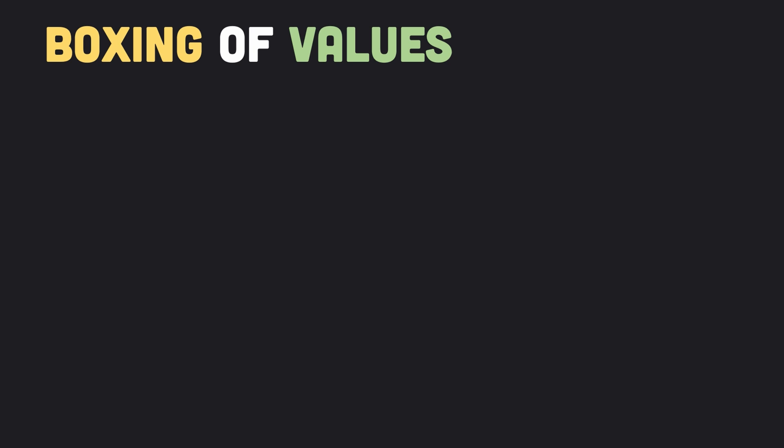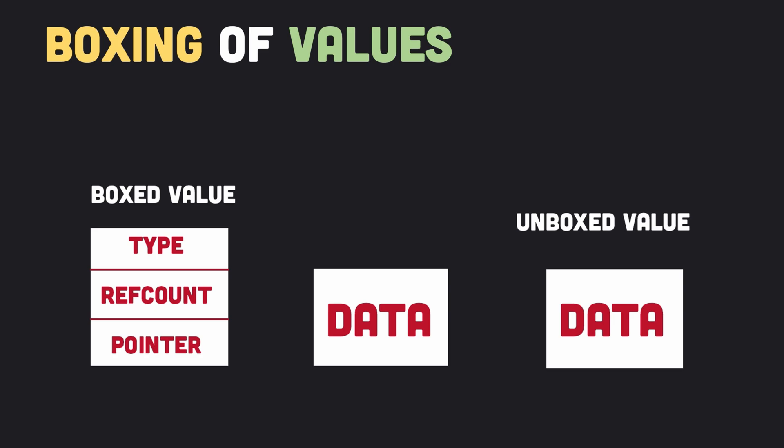In almost every dynamic language, every single value is boxed. What that means is that the actual data is placed inside a sort of generic box. More specifically, the value gets bundled with metadata which describes it. Most important is a tag describing the type of the value. Frequently there are other fields to handle memory management. If memory is managed by reference counting, then a reference counting field (refcount) would be included. In most modern programming languages, memory is managed automatically — Julia is no exception. You don't have to explicitly allocate or free memory as in C or C++.